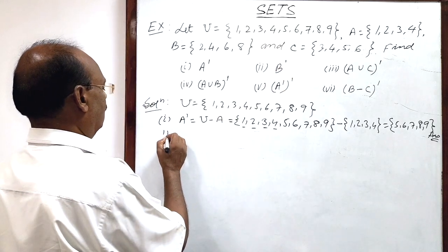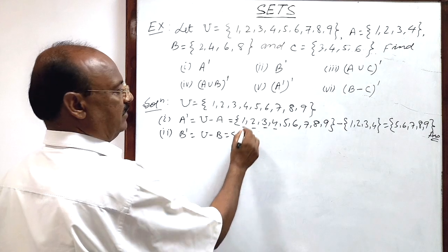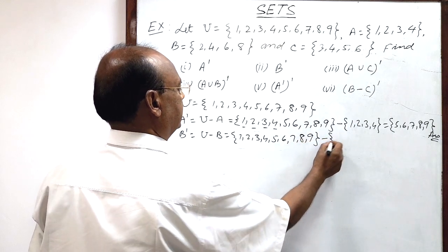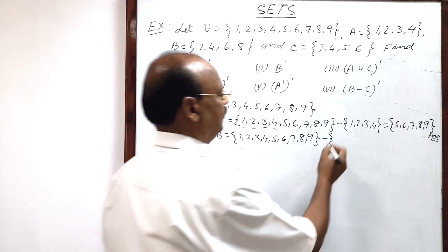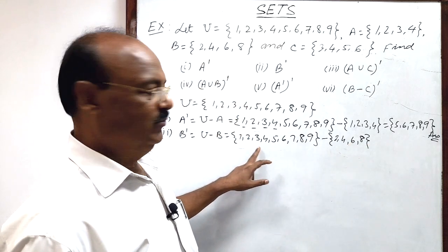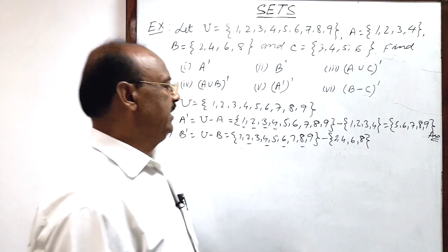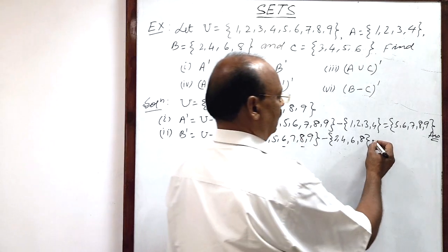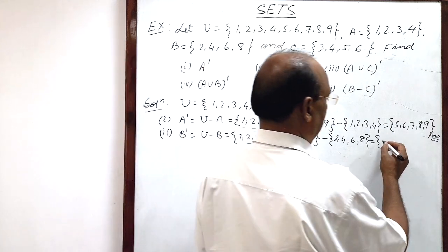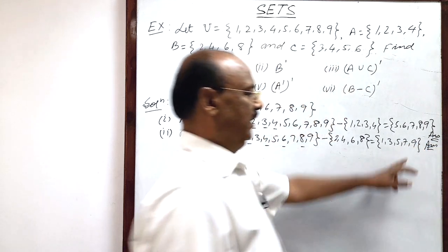Similarly, we can do the second question. We have to find B complement, and B complement means universal set minus set B. Universal set = {1, 2, 3, 4, 5, 6, 7, 8, 9} minus set B = {2, 4, 6, 8}. These elements of set B will be deleted from the universal set. Remaining elements in B complement will be 1, 3, 5, 7, 9 — all odd numbers. This is the value of B complement.